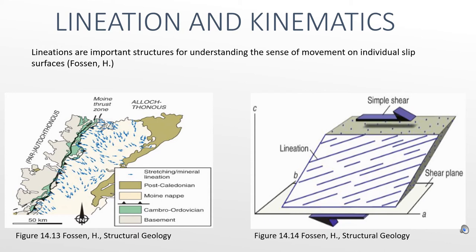Let's switch gears and talk about lineation and kinematics. In geology, kinematics means the motion of a surface or block. Geologists always thought that lineation and kinematics have a link between them during deformation. It was thought that most lineations near the thrust zone are oriented almost perpendicular to the thrust, which was later rejected.